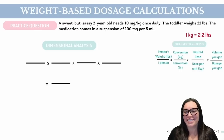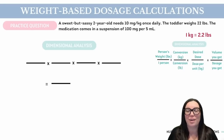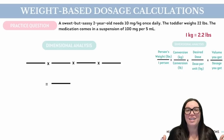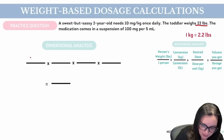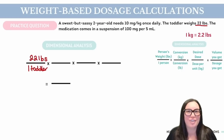Our next practice question states: a sweet but sassy two-year-old needs 10 milligrams per kilogram once daily. The toddler weighs 22 pounds, and the medication comes in a suspension of 100 milligrams per 5 mLs. We're starting with what we know about our little sassy toddler — they weigh 22 pounds. So we go ahead and plug in 22 pounds on the top of our fraction and one toddler on the bottom.